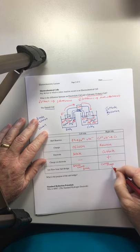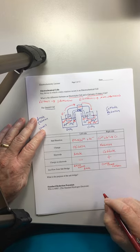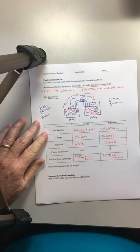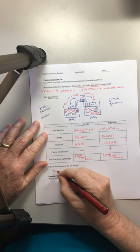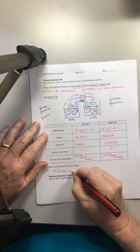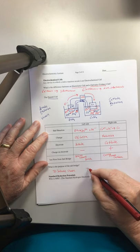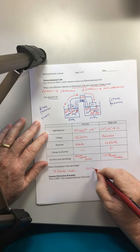And then the ion flow from the salt bridge will be that the anions go towards the anode and the cations go towards the cathode. So the salt bridge itself, what's its purpose? To balance charge. Or maybe you want to say it to complete the circuit if you're a physics fan.